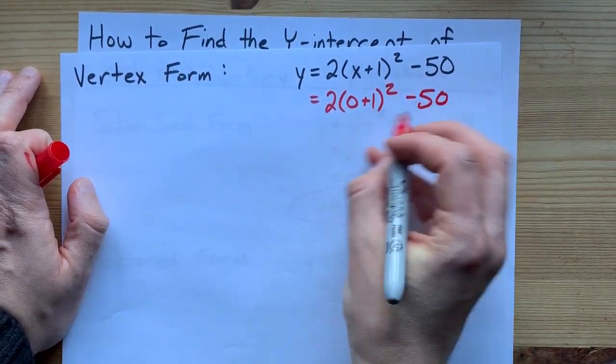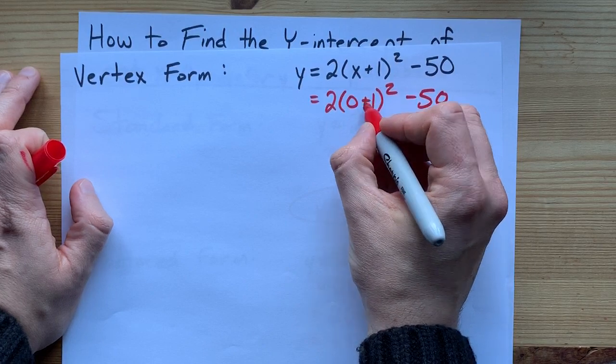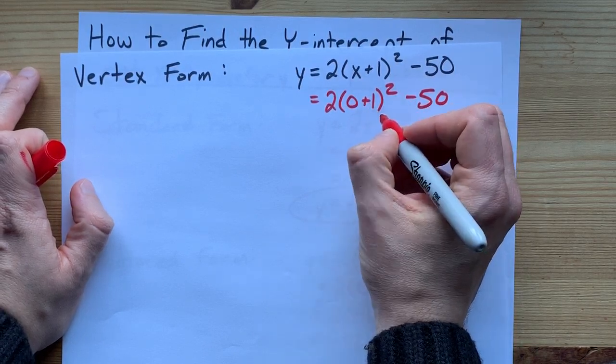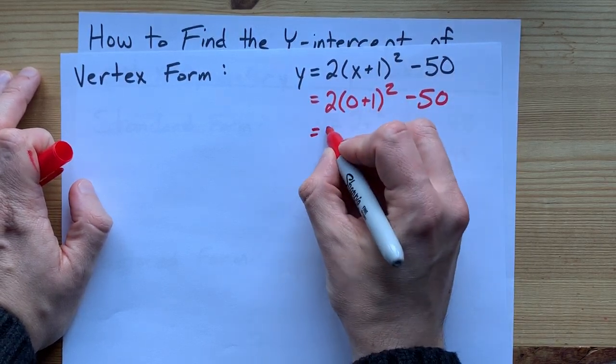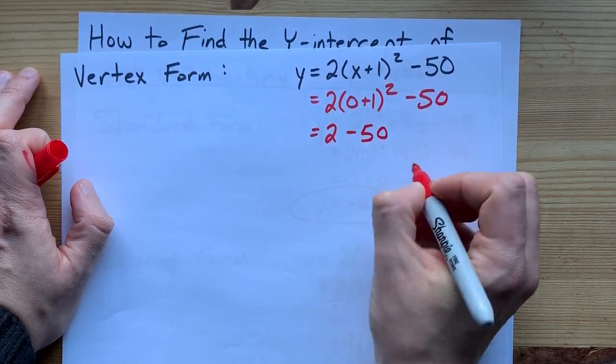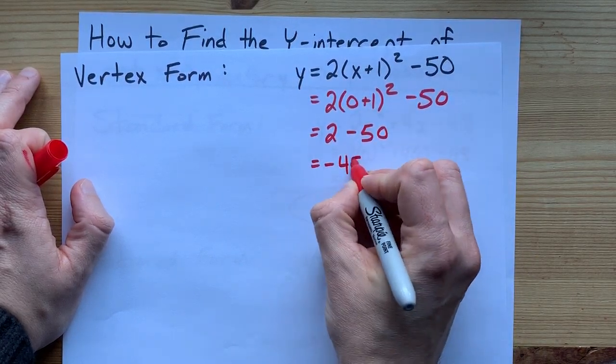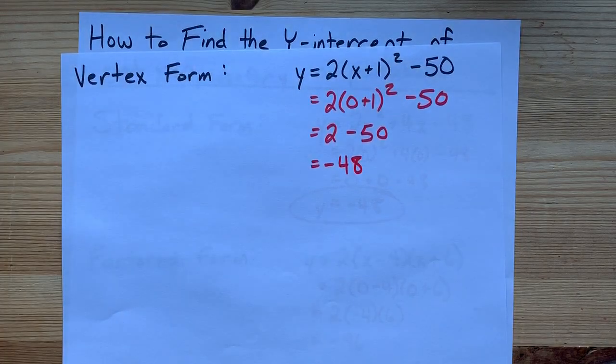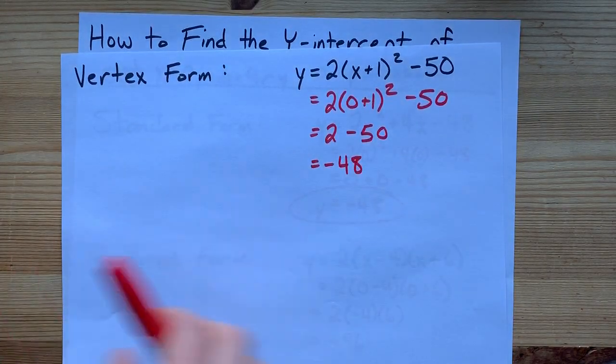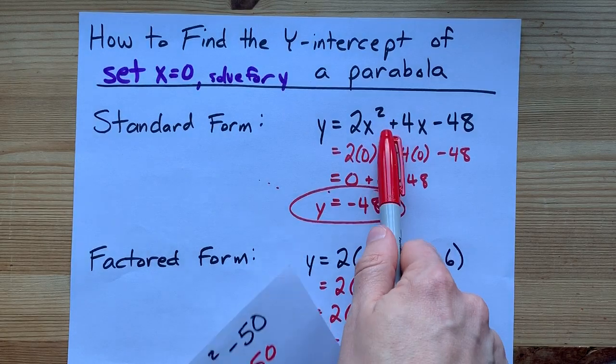Now I'm just going to do the math here. 0 plus 1 is 1. 1 squared is 1. And 2 times that is 2. That's 2 minus 50. I get negative 48 for the y-intercept of this one. Now that makes sense to me, because I actually rigged this one to be the same as this one.